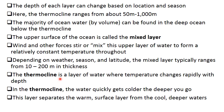The thermocline is a layer of water where temperature changes rapidly with depth. It is the layer between the upper and deep ocean. In this layer, the water quickly gets colder the deeper you go. The thermocline layer separates the warm surface layer from the cool, deeper waters.